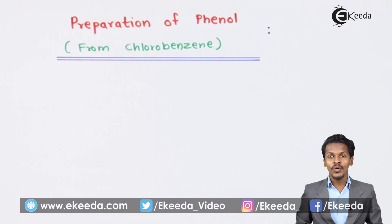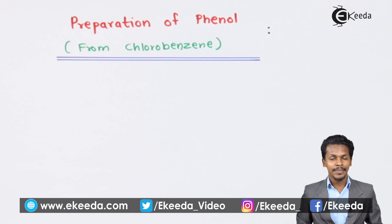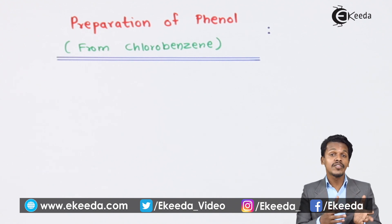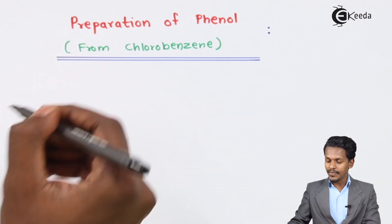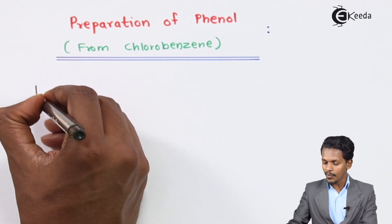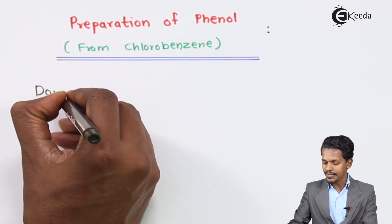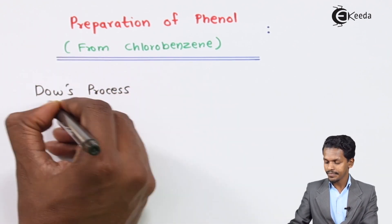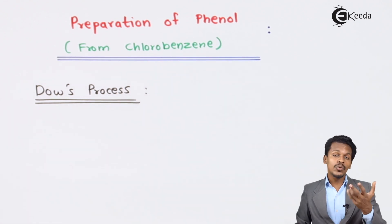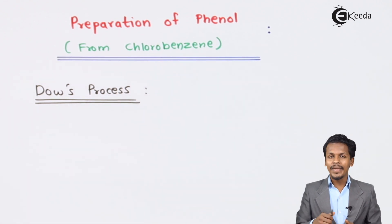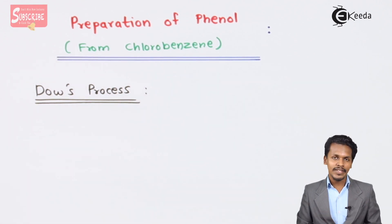We are going to talk about the preparation of phenol from chlorobenzene. There are basically two methods by which we can convert chlorobenzene to phenol. The first one is Dow's process, which is a two-step process.